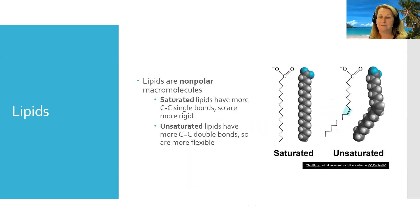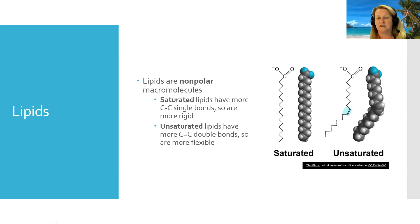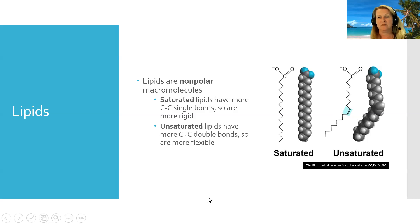Finally, let's talk about lipids. Lipids are non-polar macromolecules, and there are two basic kinds. Saturated lipids have all single carbon-carbon bonds, which tends to make them have straight chains in three dimensions, making them more rigid at room temperature because they stack easily on top of each other. Unsaturated lipids, however, have one or more double bonds between carbons, which causes a bend or kink in the chain, making them more flexible at room temperature because they don't stack as well.